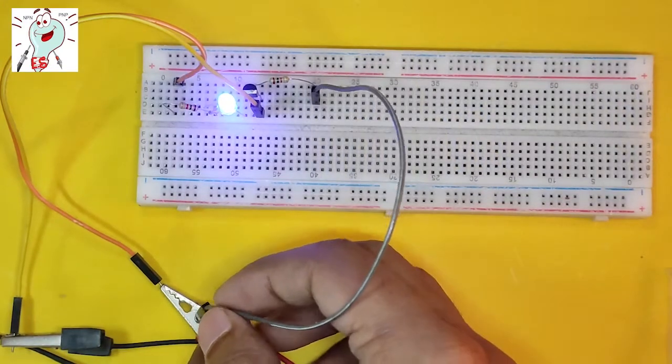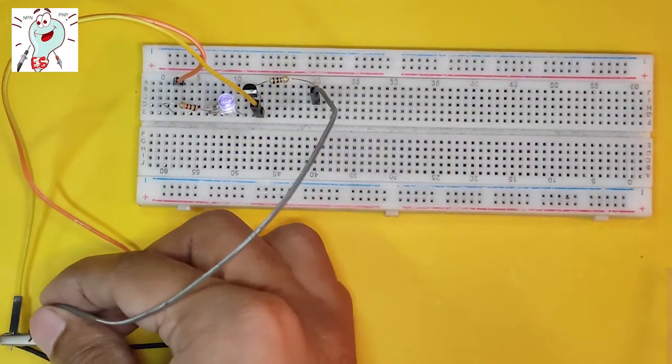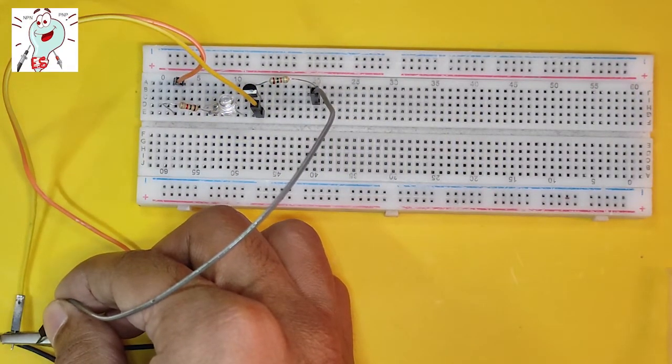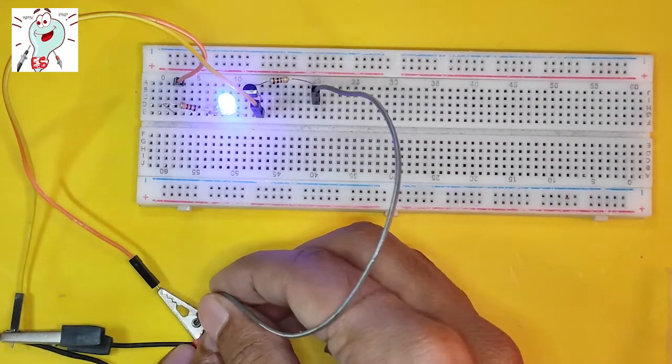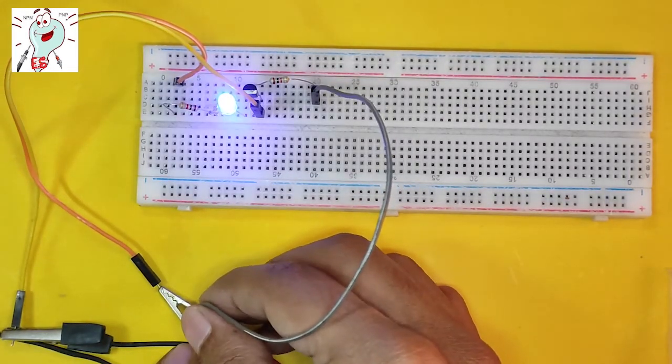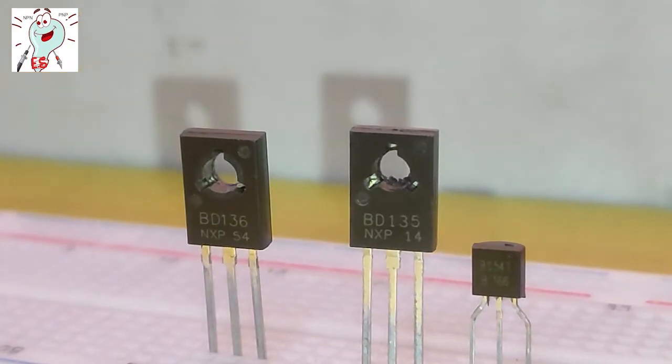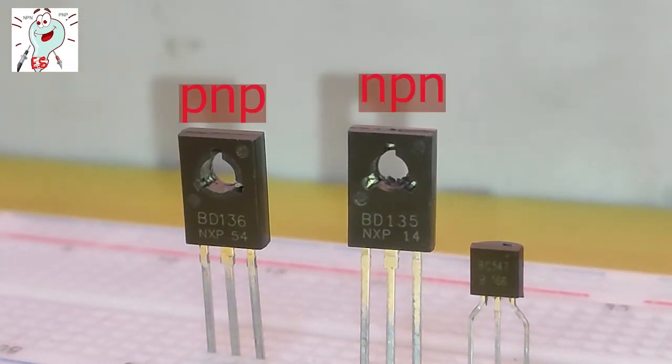The basic use of a transistor is to turn on or off any circuit electrically, or to amplify any kind of signal or power. In this video, I'm going to show you NPN and PNP transistors.